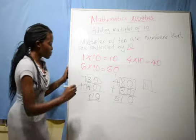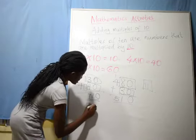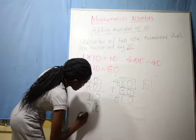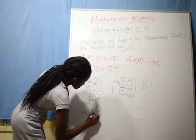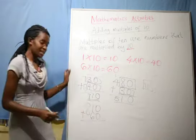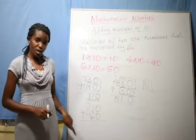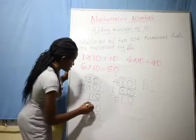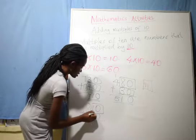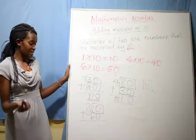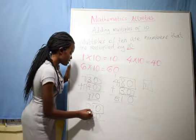Our last example is 810 plus 60. What are the multiples of 10 in that number? We have 10. Good, 10. Another multiple of 10 is 60. Good, we have 60.